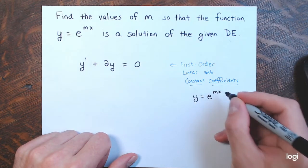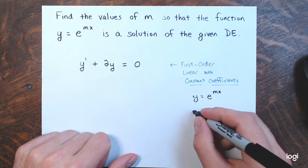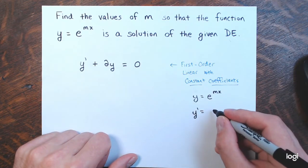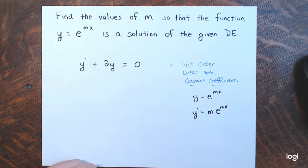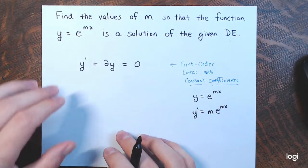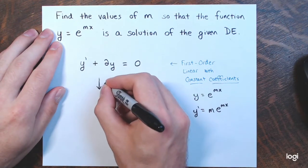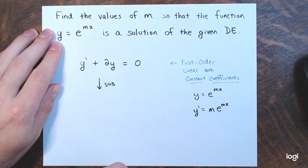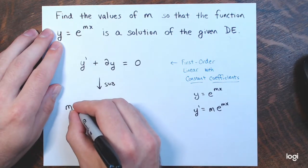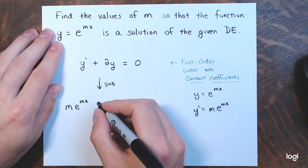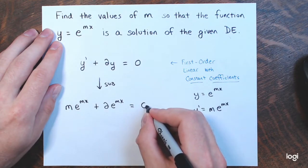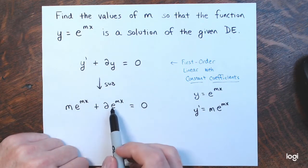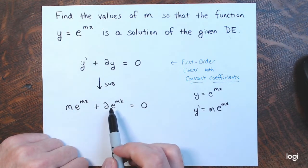We take y equals e to the mx. It's a first order equation, so we need y prime, which would be m times e to the mx using the chain rule. Making the substitution into the equation: y prime is m times e to the mx, plus 2y which is e to the mx, and this equals 0.